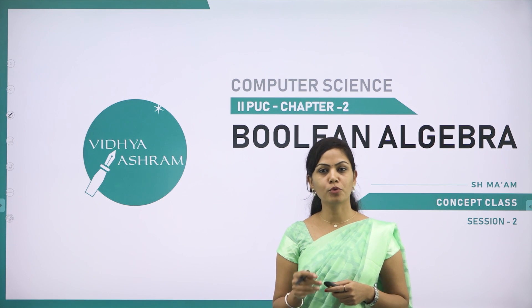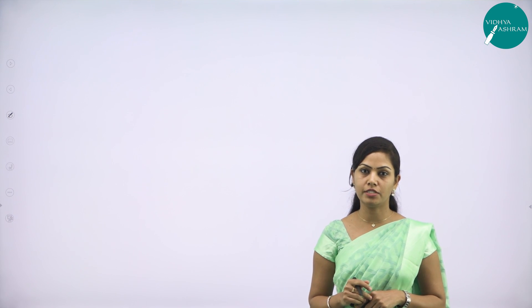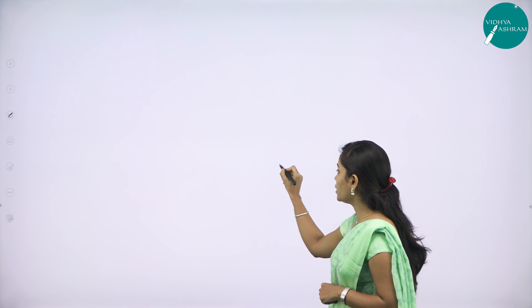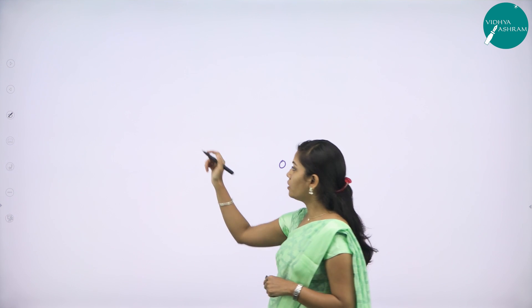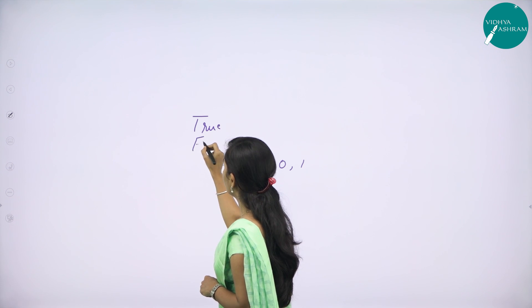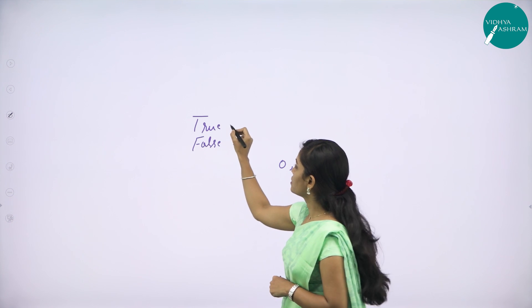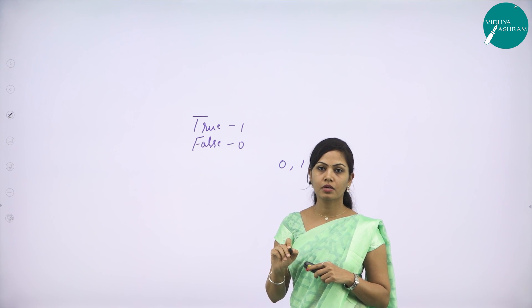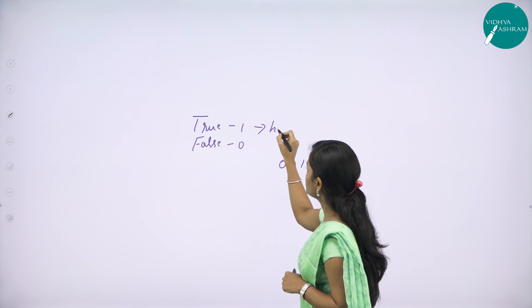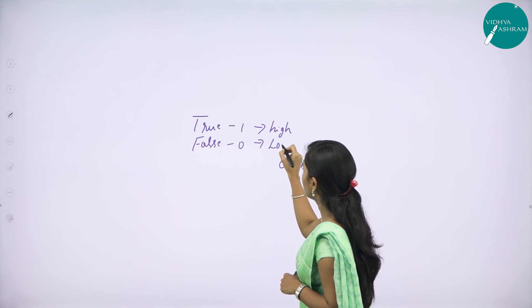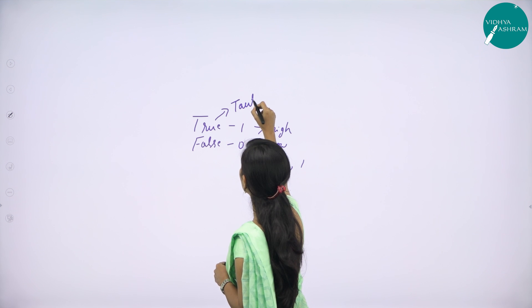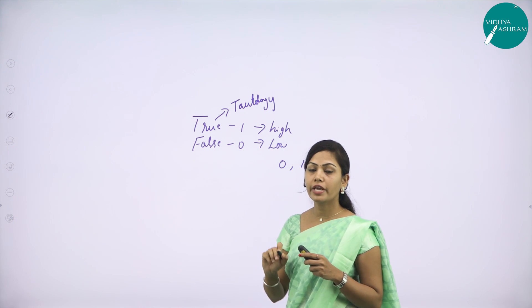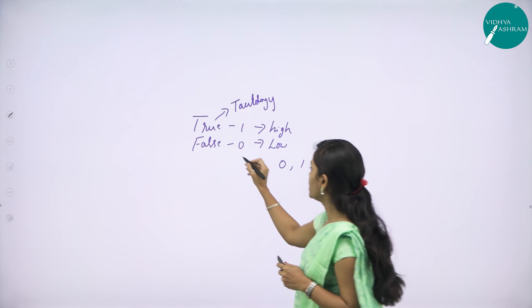In the last session, I discussed Boolean Algebra, Truth Table and Logical Operators. An algebra that deals with binary number system is called Boolean Algebra. Binary number system represents only 0 and 1. A Boolean equation can have only one of the two possible values, that is true or false. True means it is 1 and false means it is 0. 1 means condition is high and 0 means condition is low. The result of an expression that is always 1 or true is called a tautology, and the result that is always false or 0 is called falsity.